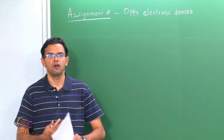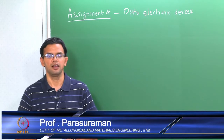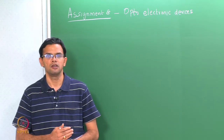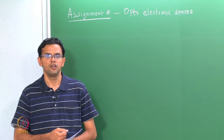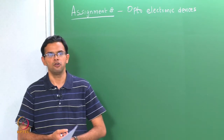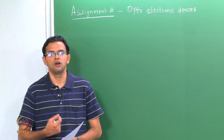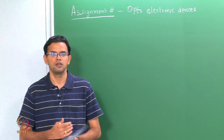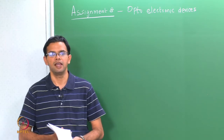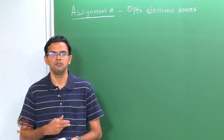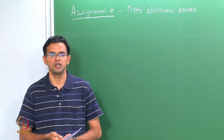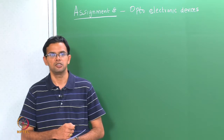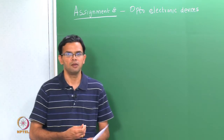We did a bit of solar cell work trying to calculate the current voltage characteristics. Some of the assignment problems here will mostly deal with solar cells. We will also look a bit at photoconductors and also a problem on LED. We would not be focusing on lasers because the way the laser works is very similar to how an LED works, except that you have a population inversion that is created and you have an incoming photon that stimulates the emission. Let us go to problem number 1.